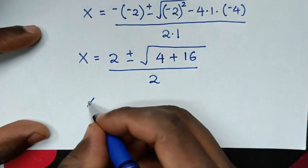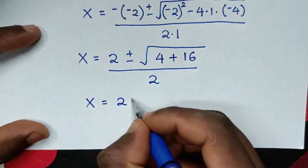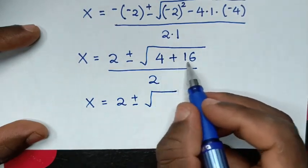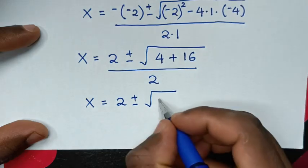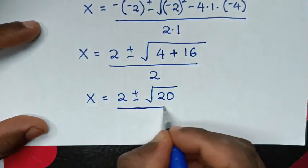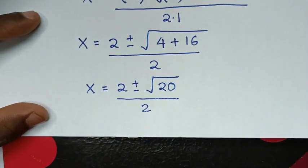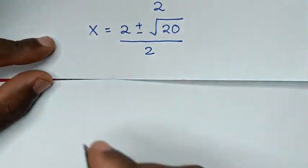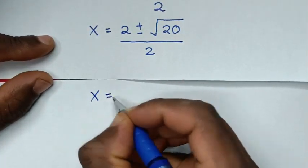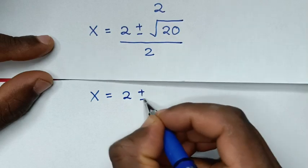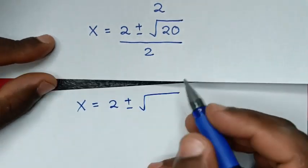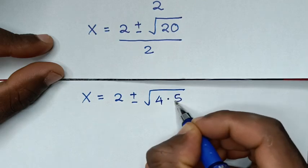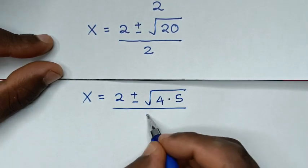So it will be x equal to 2 plus or minus square root of 4 plus 16, which is 20. Then x equals 2 plus or minus square root of 20, and 20 is the same as 4 times 5, all over 2.